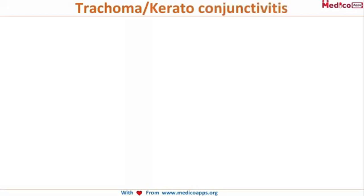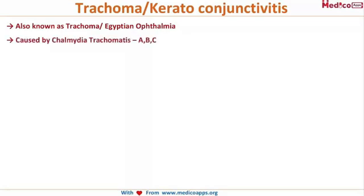Trachoma is a very famous disease, also known as Egyptian ophthalmia. It is caused by Chlamydia trachomatis types A, B, and C.